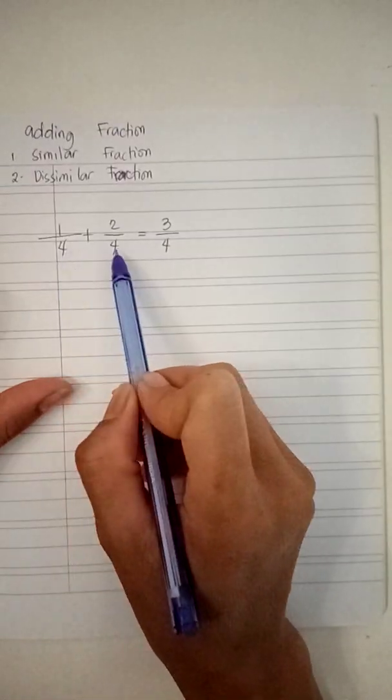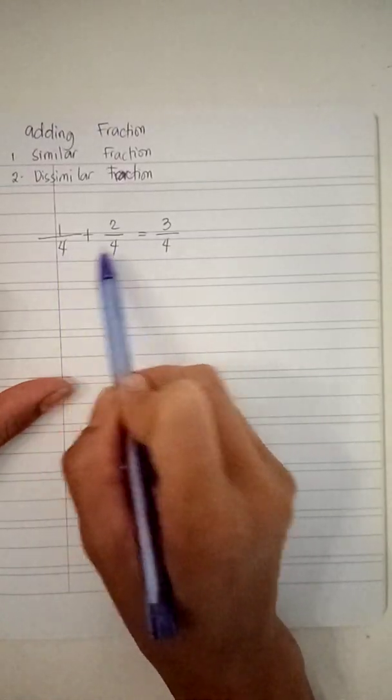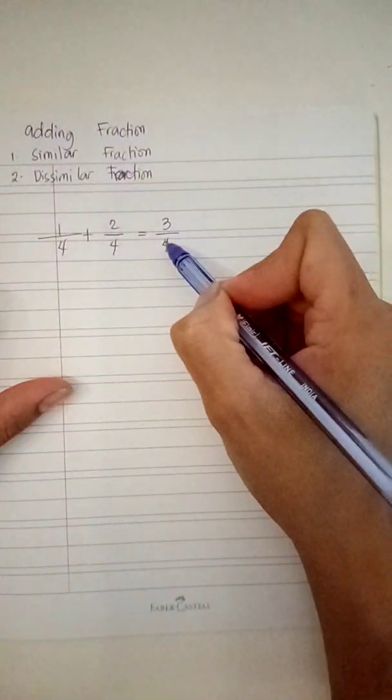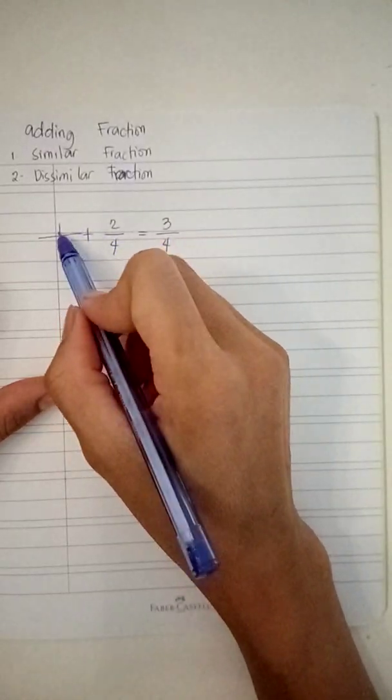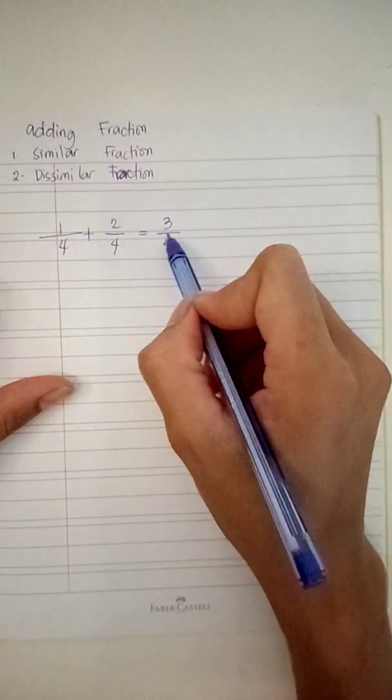Simply just copy the denominator, which is four, because they are similar. You see, you copy the four and just simply add the numerator, which is one plus two equals three.